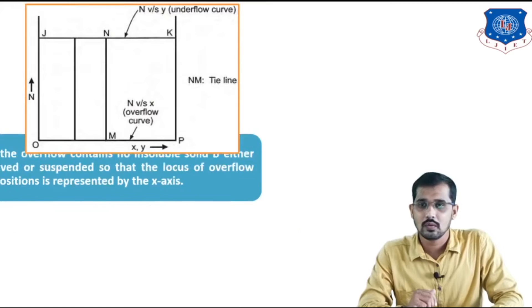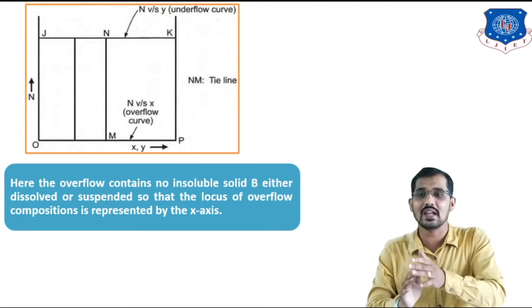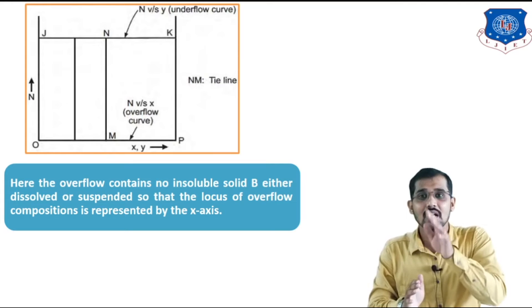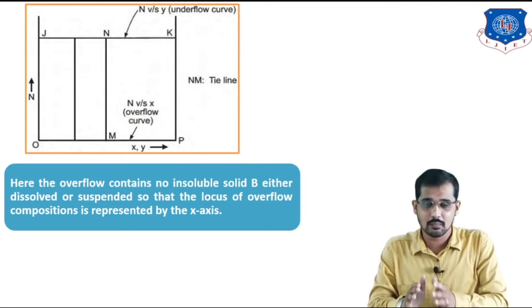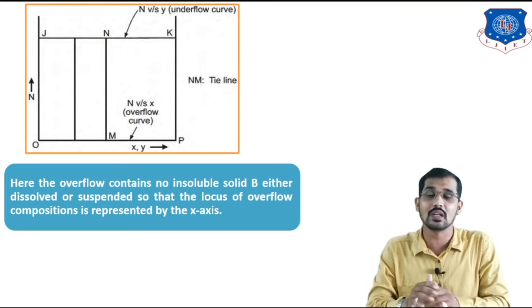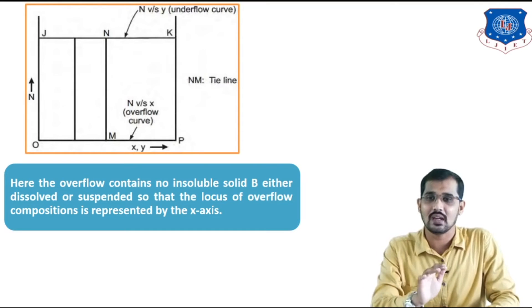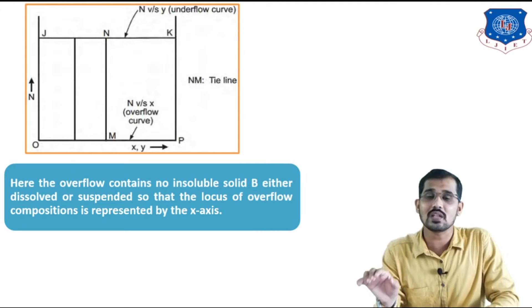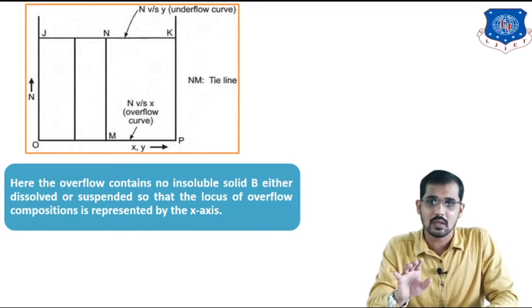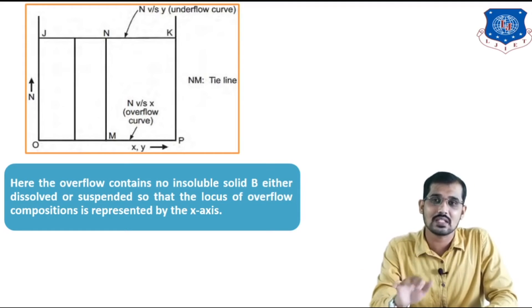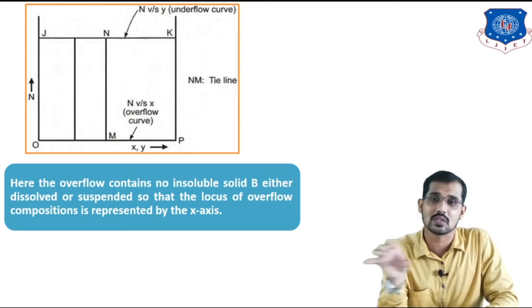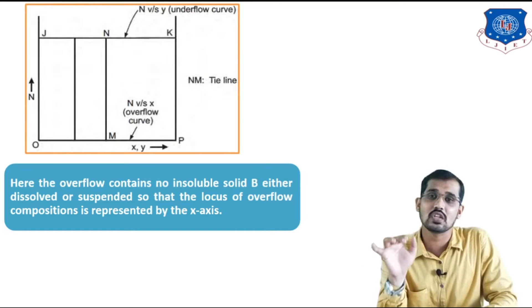Now we will see another curve. The vertical lines NM are tie lines. All vertical lines are tie lines, and their being vertical means we are providing sufficient contact time for the solid and liquid for the leaching process. After that, the line JNK is a straight line, meaning there is constant underflow. In the previous figure that line was not straight — it was a varying line, representing variable underflow. Here the JK line is straight, so the underflow condition is constant in nature.